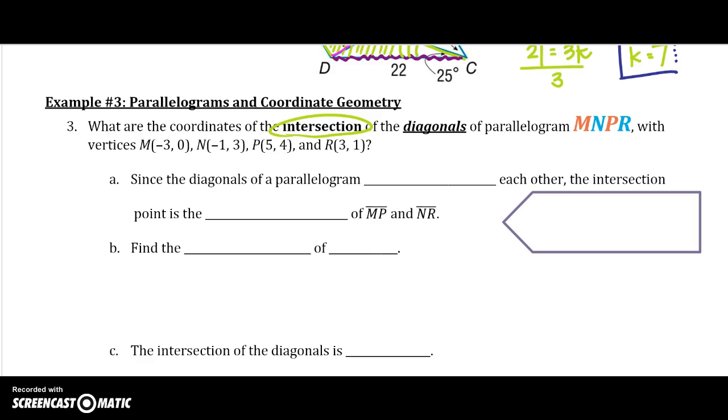So, since the diagonals of a parallelogram bisect each other, the intersection point is the midpoint of each diagonal. The big thing here, when you are given the label of the parallelogram, since the diagonals are the non-consecutive vertices, it's almost every other letter. So the diagonal here would be MP and NR. So that is one way, without drawing, you can find the diagonal.